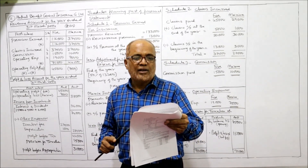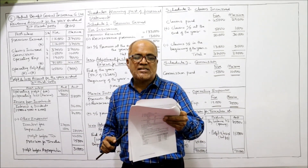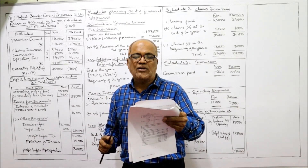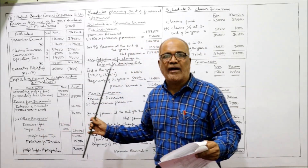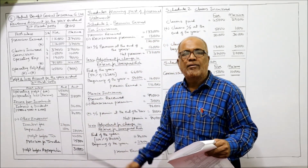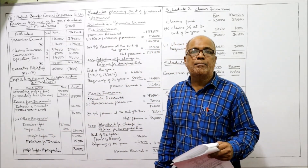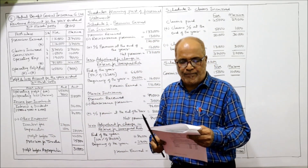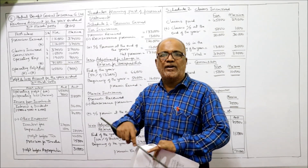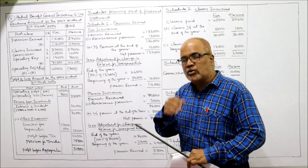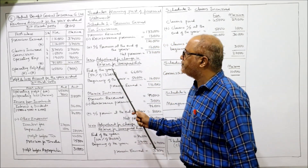Reserve for non-expired risk at the beginning of the year: fire = 50,000, marine = 37,000. These will be used while making Schedule 1 — Premium Earned. Now coming to Schedule 1.